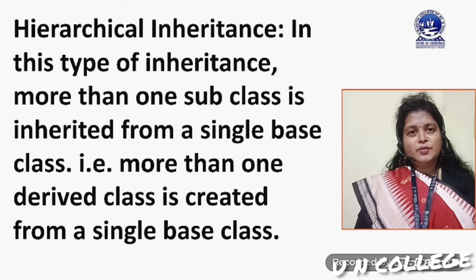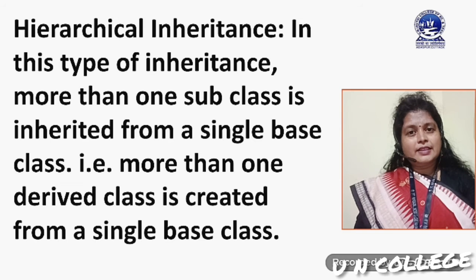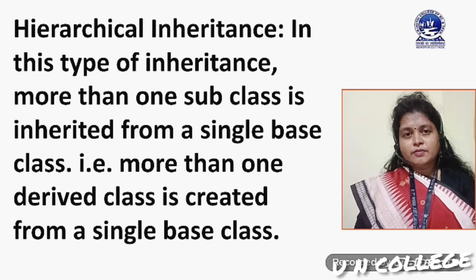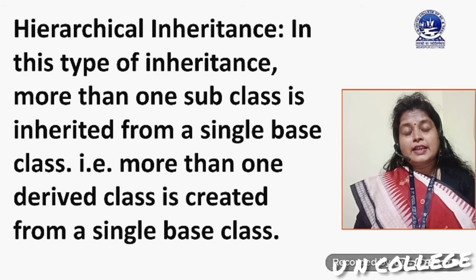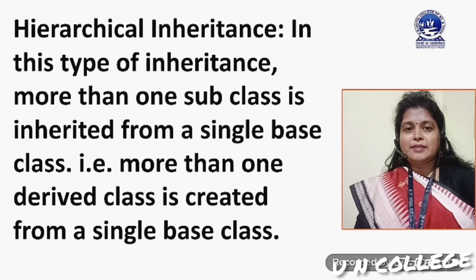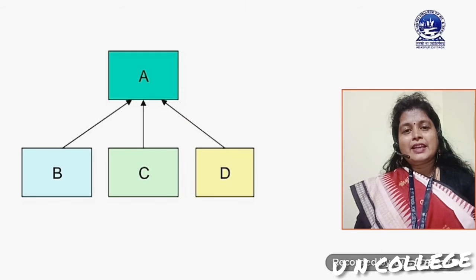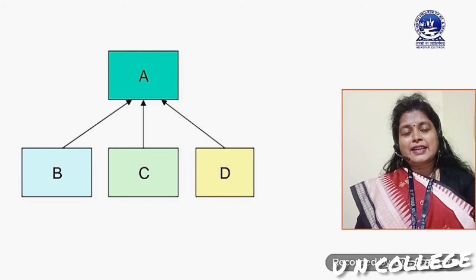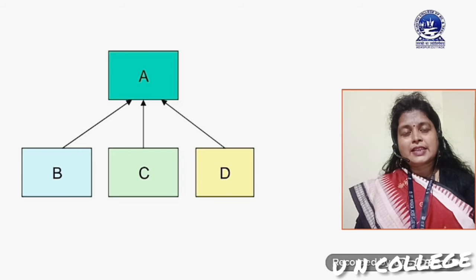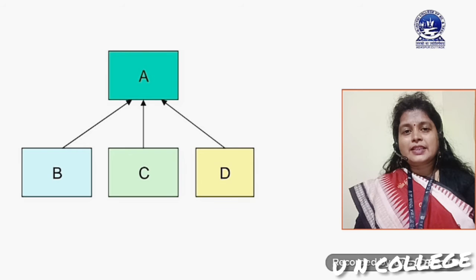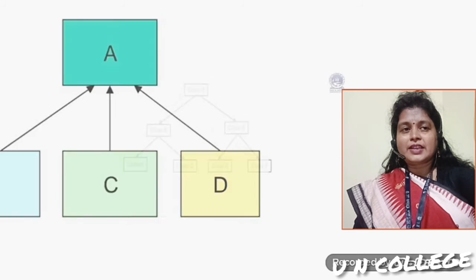Now I am going to discuss about hierarchical inheritance. In this type of inheritance, more than one subclass is inherited from a single base class — that is, more than one derived class is created from a single base class. Here I have represented it in a diagrammatic way. You can see I have used four classes A, B, C, D, where A is the base class and B, C, D are all derived classes.